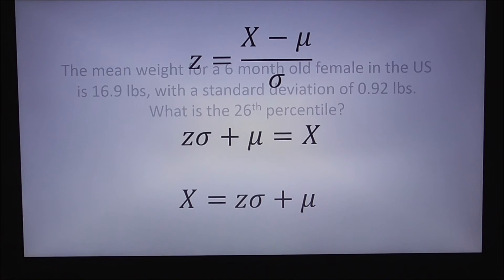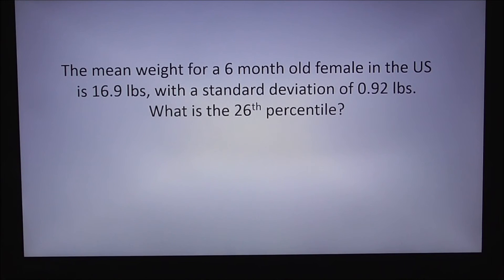So let's try a couple of these. Question number one. The mean weight for a six-month-old female in the U.S. is 16.9 pounds, with a standard deviation of 0.92 pounds. What is the 26th percentile?